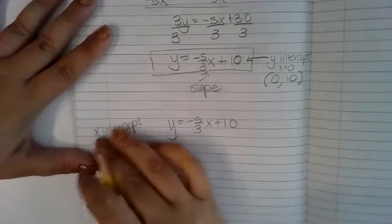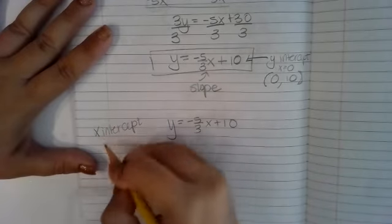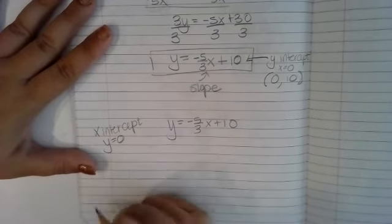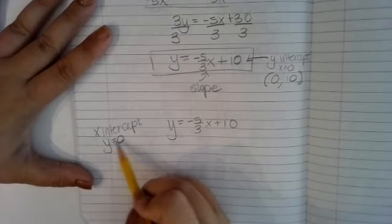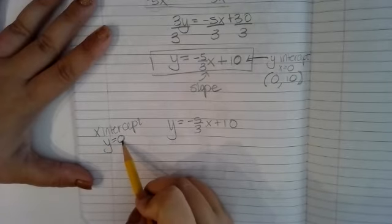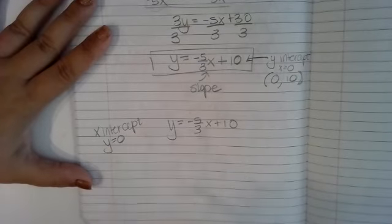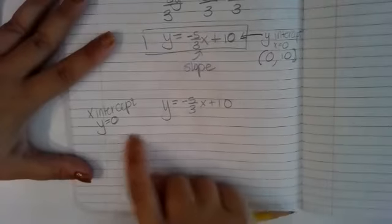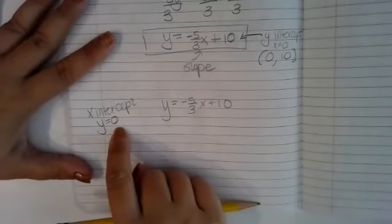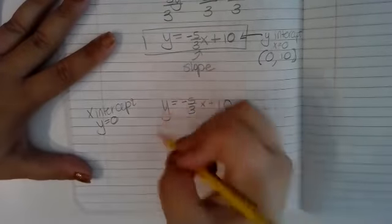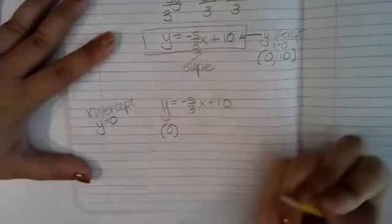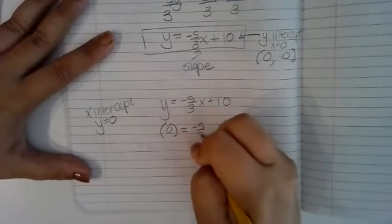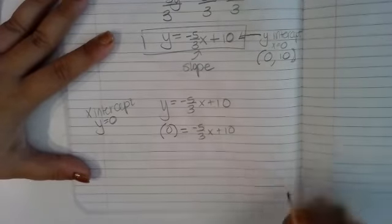To find the x-intercept, that means y has to equal zero. So the first thing I need to do is substitute zero for y: zero equals negative five-thirds x plus 10.